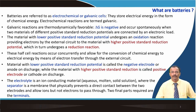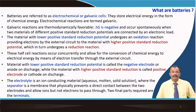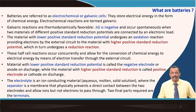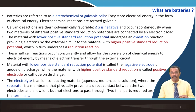Batteries are referred to as the electrochemical or galvanic cell. They store energy in the form of chemical energy, and electrochemical reactions are termed galvanic. Galvanic reactions are thermodynamically favorable — ΔG is negative, the free energy change is negative — and occur spontaneously when two materials of different standard reduction potential are connected by an electronic load. We will talk about the standard reduction potential in more detail in forthcoming lectures.